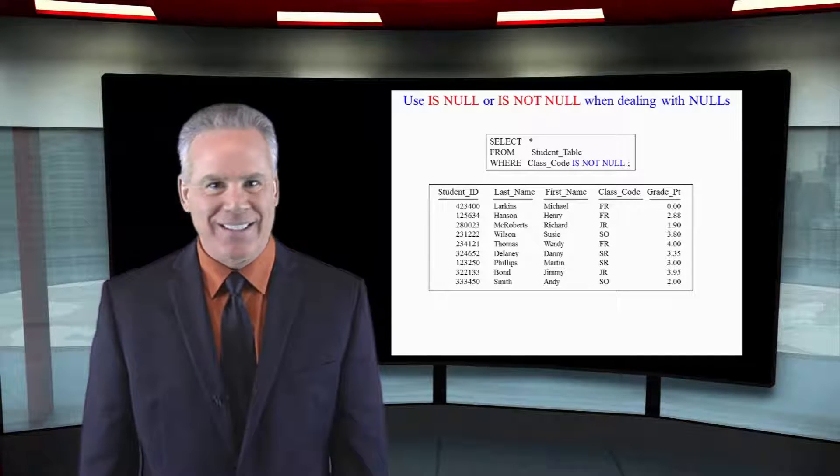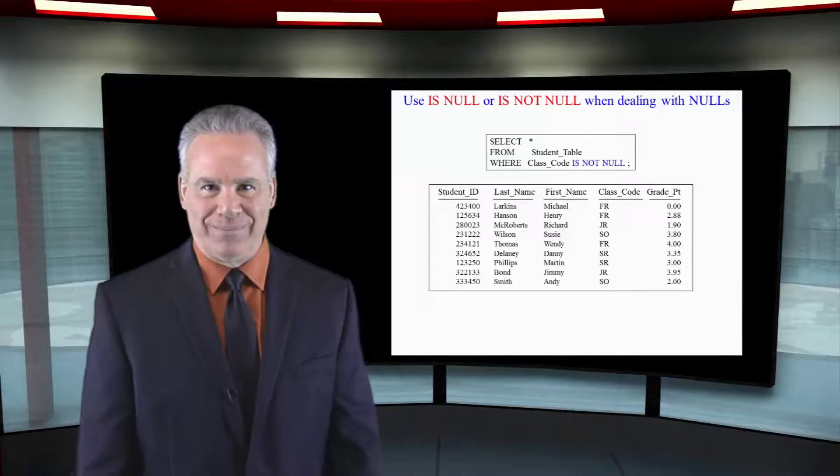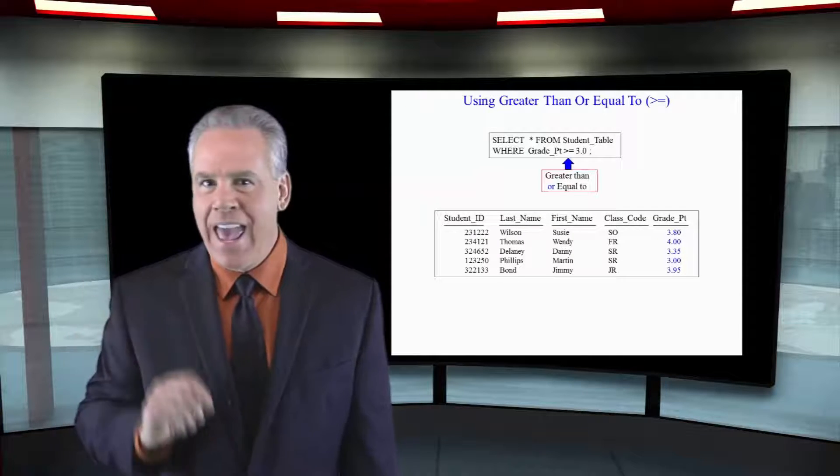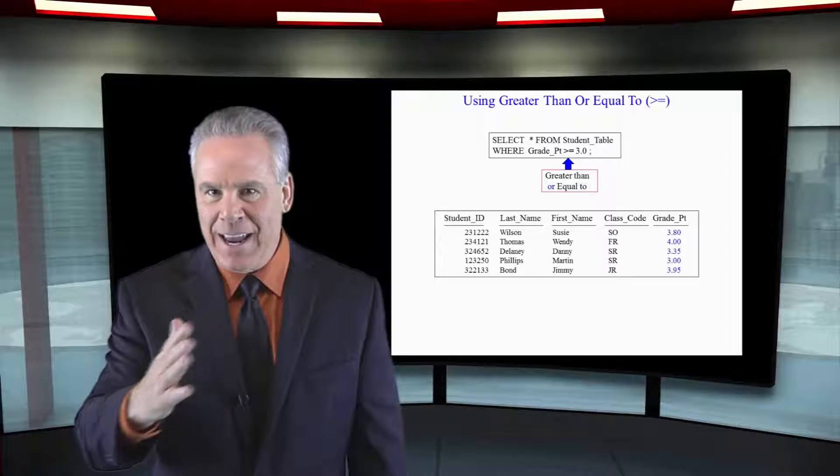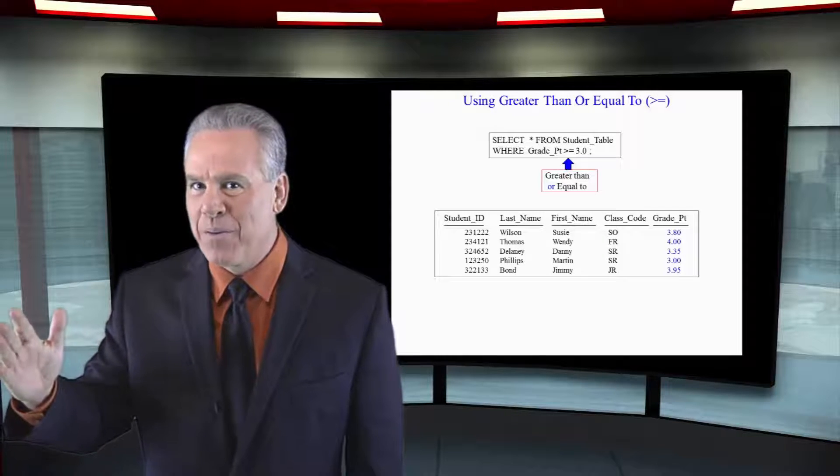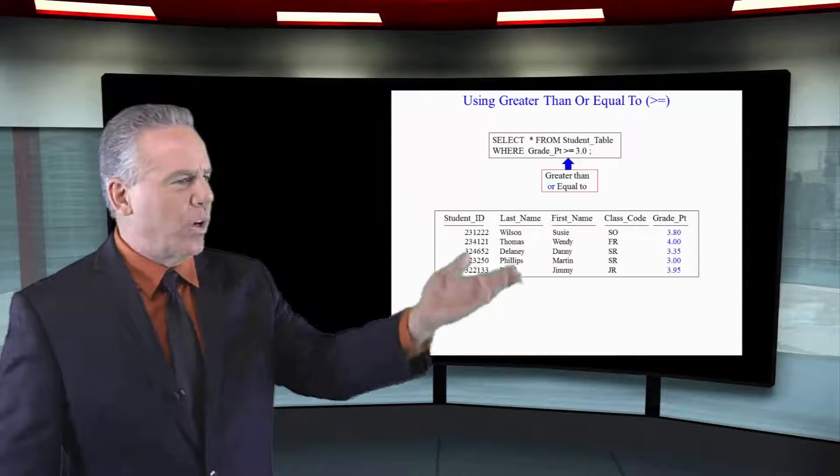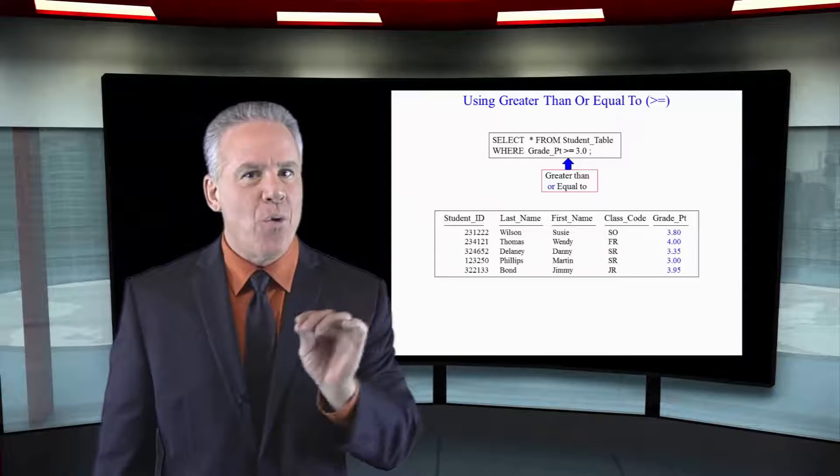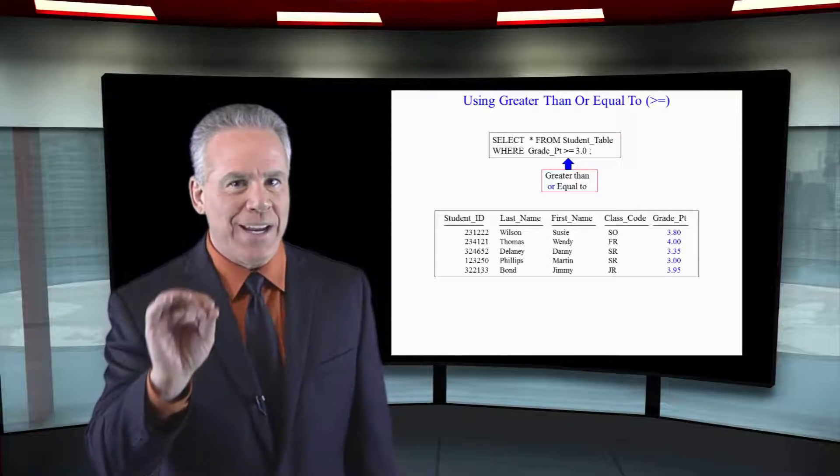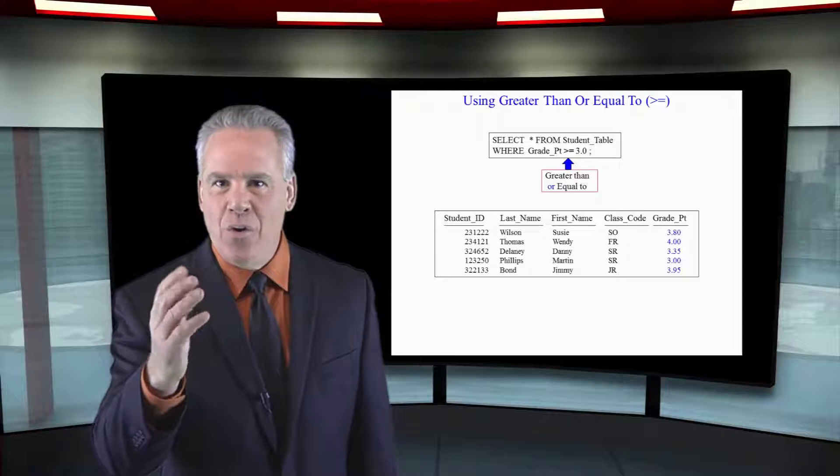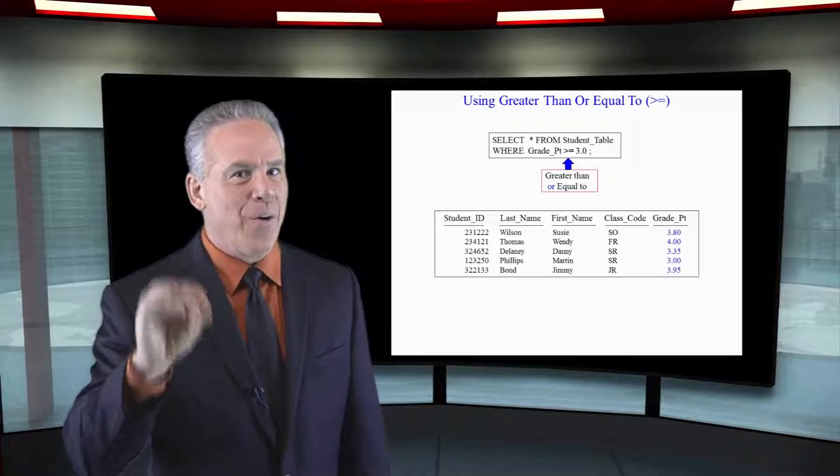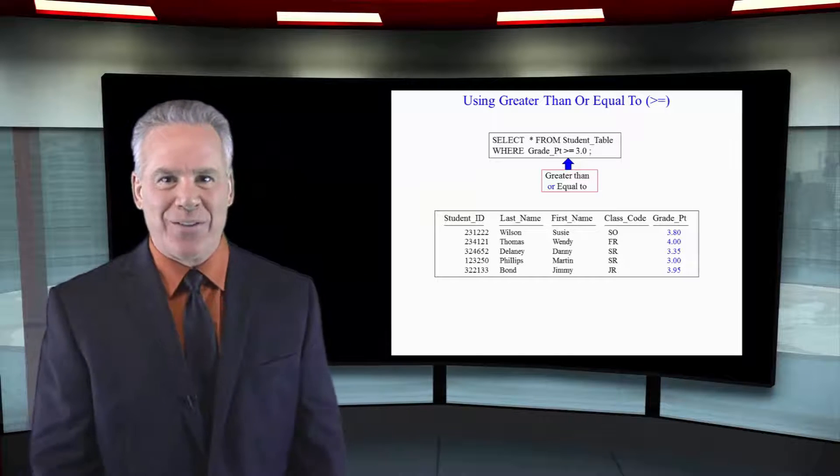After the word SELECT, columns on the report. After the word FROM, the table or tables we're pulling the information from. In this case we're going to say WHERE the grade point is greater than or equal to 3.0. Only rows where the grade point is greater than or equal to 3.0 will return on the report.